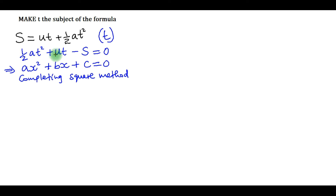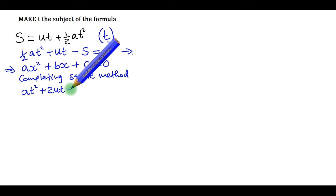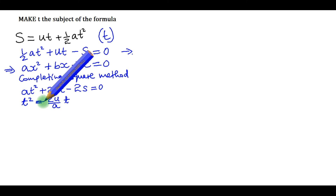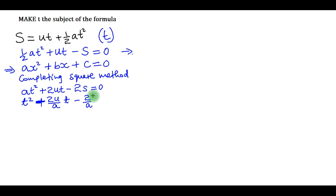So this is the equation I am talking about. I multiply through by 2, so I will get at² + 2ut − 2s = 0. Again, I divide through by a, and this will give t² + (2u/a)t − (2s/a) = 0.